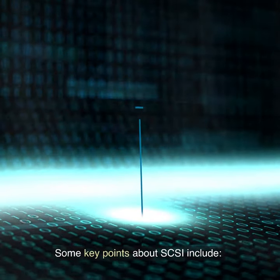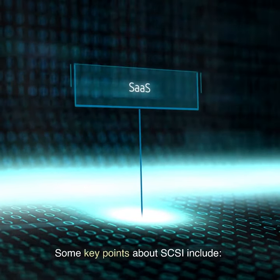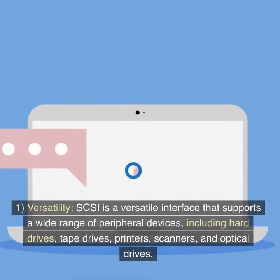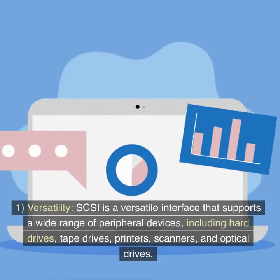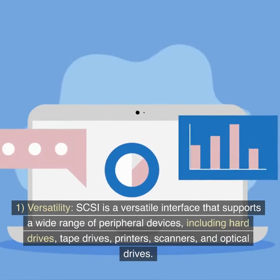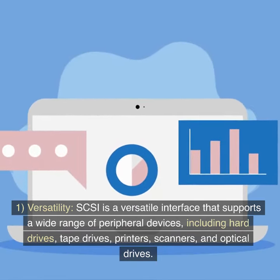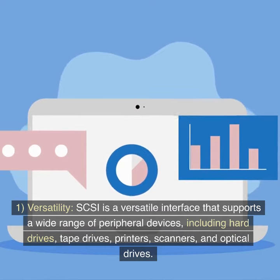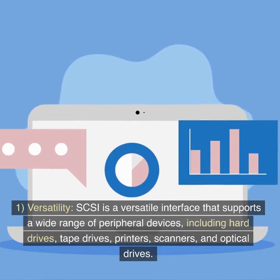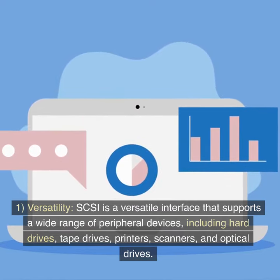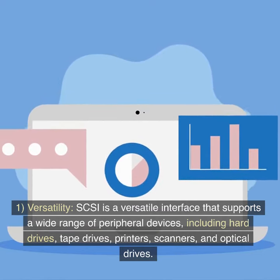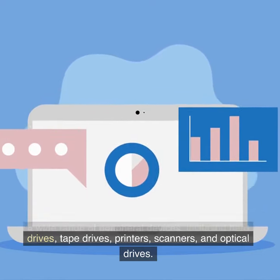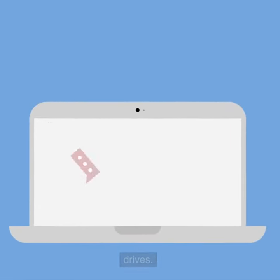Some key points about SCSI include: 1. Versatility. SCSI is a versatile interface that supports a wide range of peripheral devices, including hard drives, tape drives, printers, scanners, and optical drives.